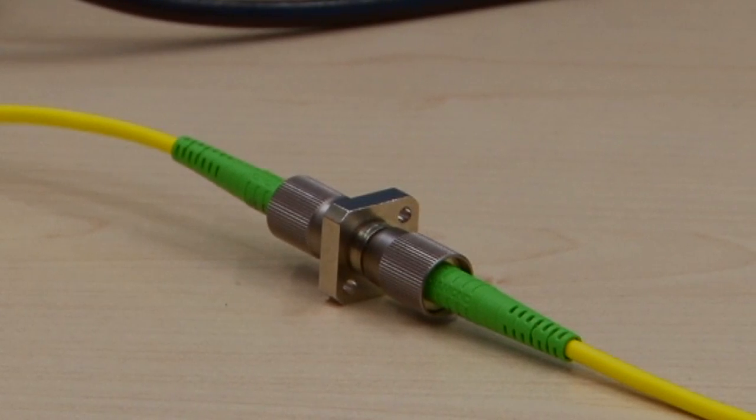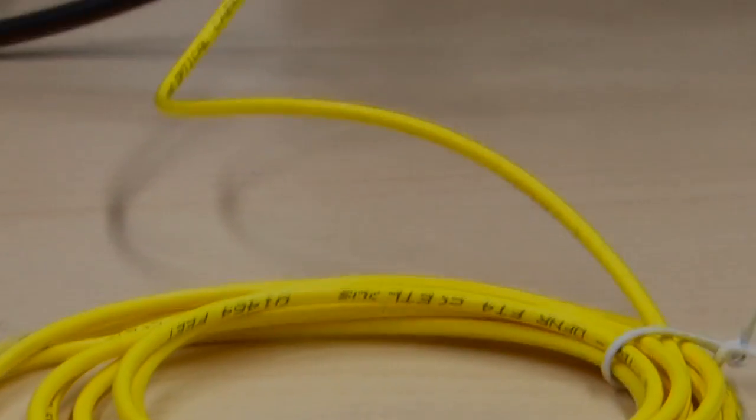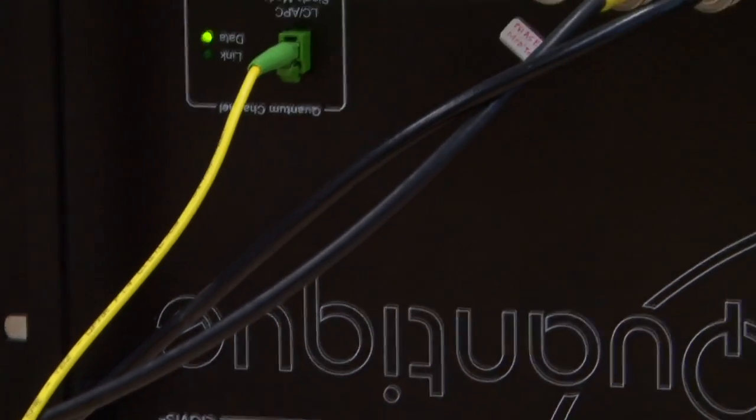The optical fiber acts as a transmission channel. In a practical application, this is of course much longer and can be on the order of 50 kilometers. Here the optical fiber enters Bob.